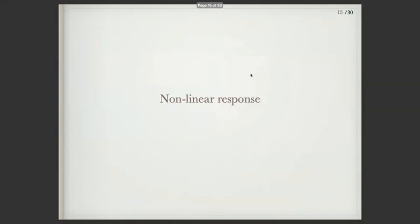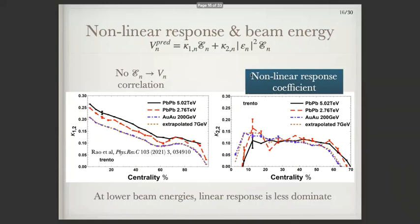What about nonlinear response — what can we get from this? We looked at this type of nonlinear response: the leading-order eccentricity plus a cubic term, and how that varies with beam energy. What you generally find is that your leading-order linear term decreases as you go from top LHC down to RHIC energies, so you have less linear response. And at the same time, as you go to lower beam energies, you get more nonlinear response. So even though you get a pretty decent Pearson correlation for linear response, you're still gradually decreasing linear response and increasing nonlinear response.